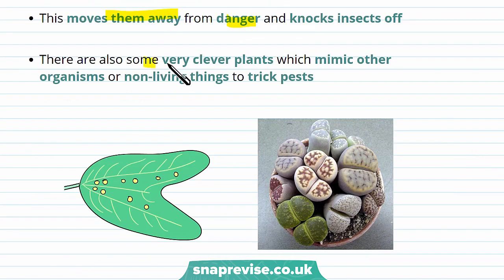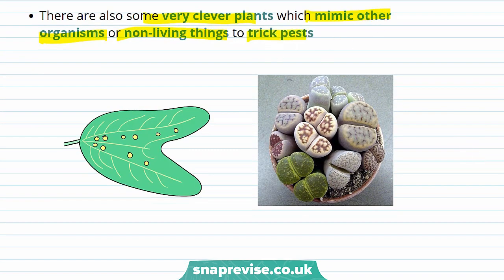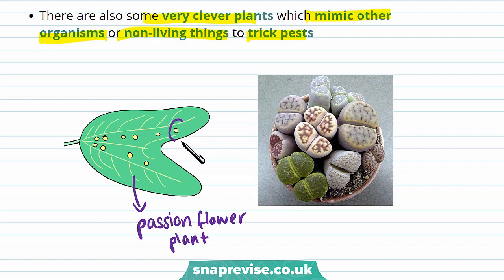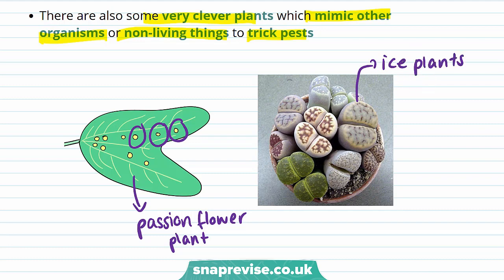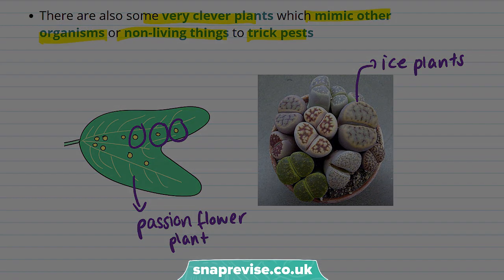There are also some very clever plants which mimic other organisms or non-living things to trick pests. For example, the passion flower has bright yellow spots on its leaves that look like butterfly eggs, preventing other butterflies from laying their eggs on the leaf. Some plants, such as ice plants found in Africa, look like stones or pebbles, which tricks animals and pests into not eating them.